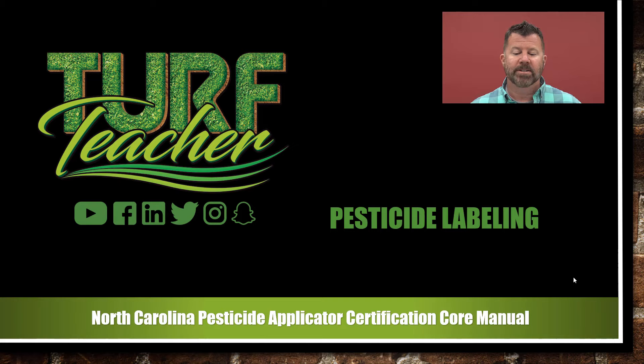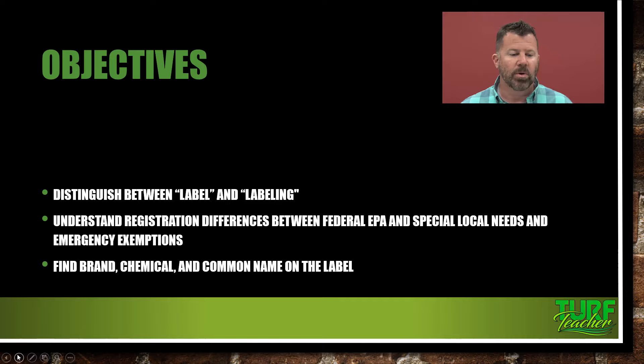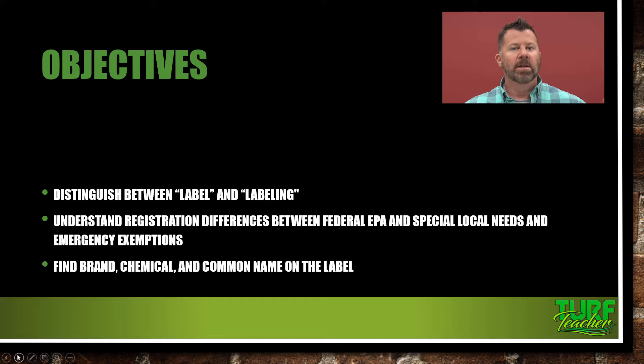Let's go ahead and look at our course objectives. Hopefully you've already read the chapter. I highly recommend that you read the chapter prior to watching the lecture, and then as you're listening to the lecture, pull out a highlighter and highlight the things that we talk about in the textbook. Our first objective is to distinguish between a label and a labeling — there are two different things. The label is a part of the labeling, but the labeling is not a part of the label.